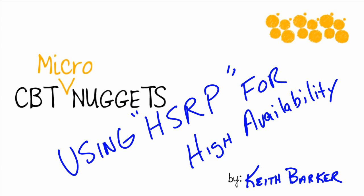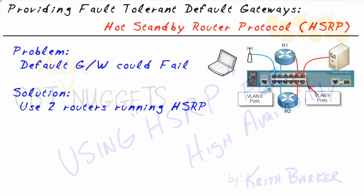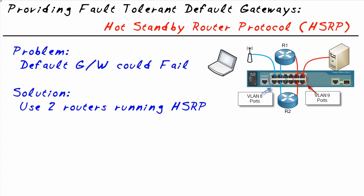As an end user on a customer network, we need default gateways to get off of the local area networks, and HSRP is one of several mechanisms that we can use to do exactly that in a fault tolerant manner. How important is a default gateway for a customer? Let's start there before we talk about fault tolerance.